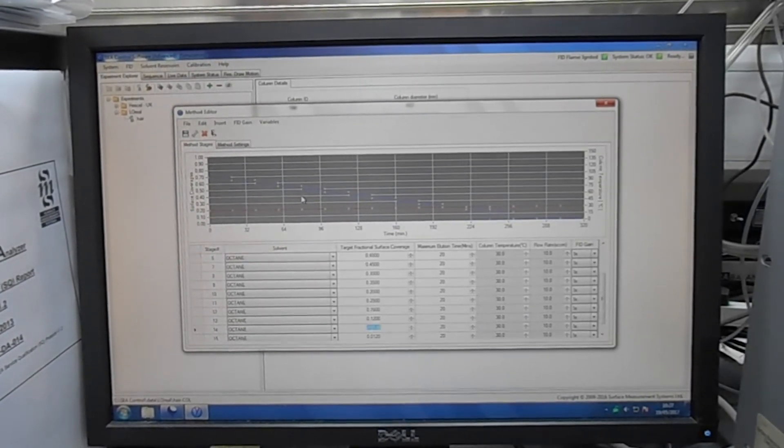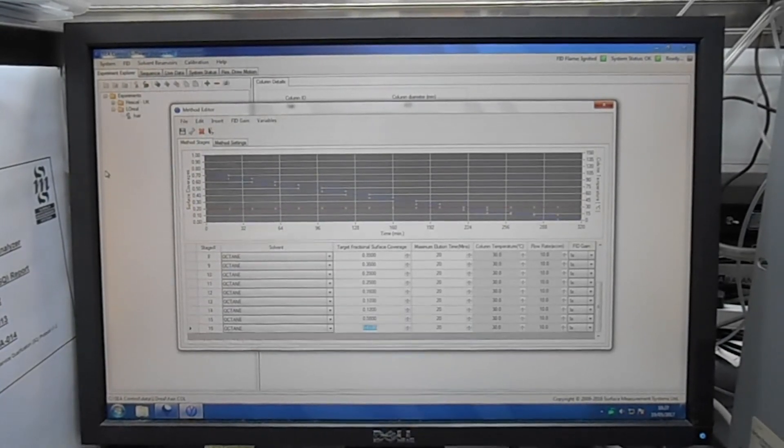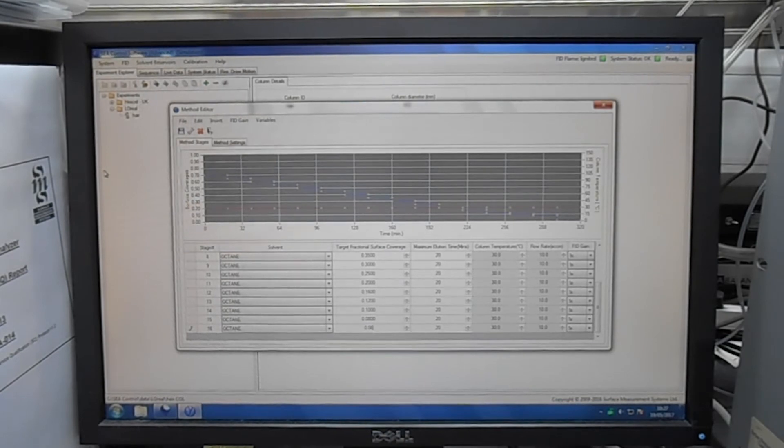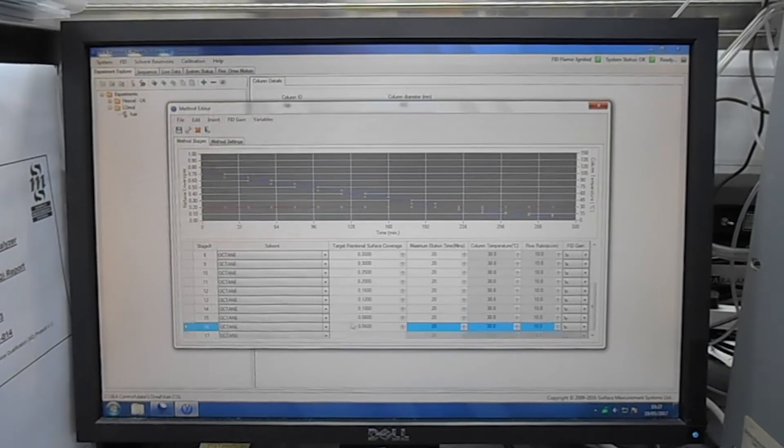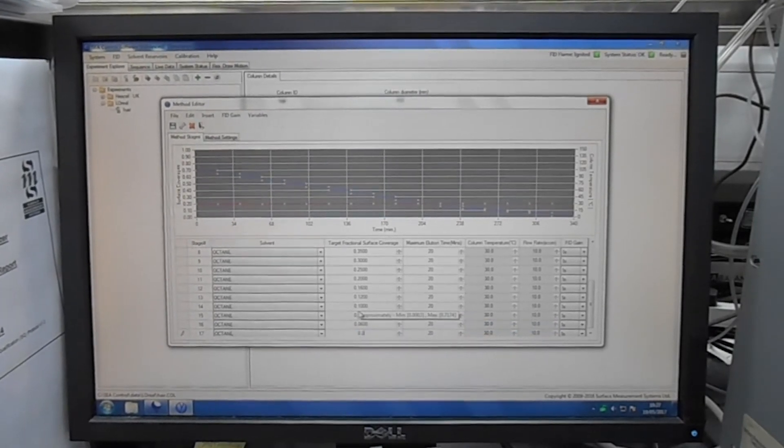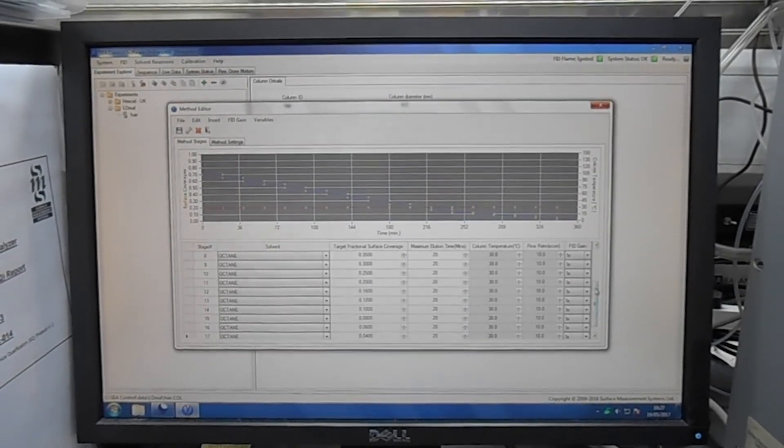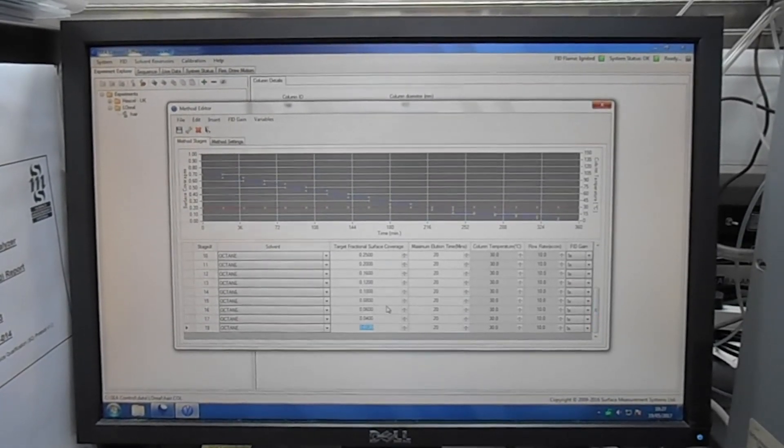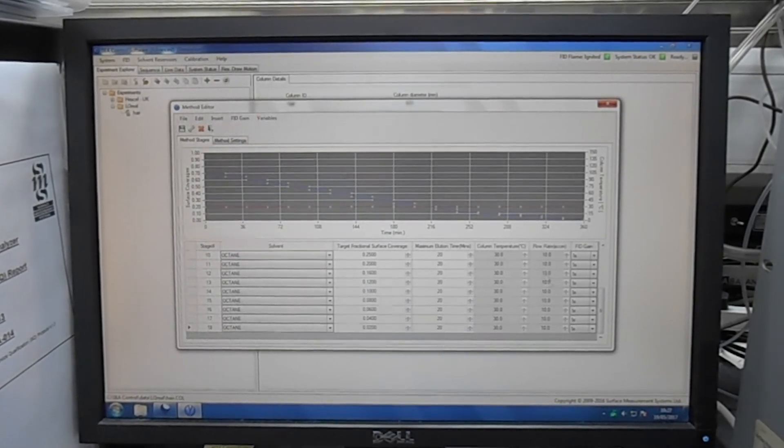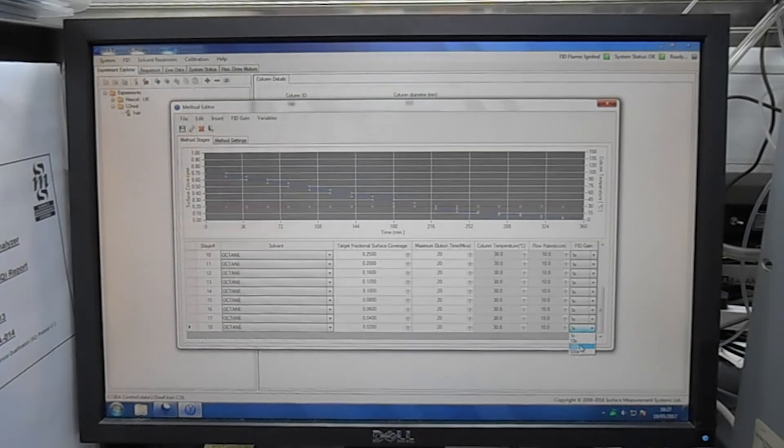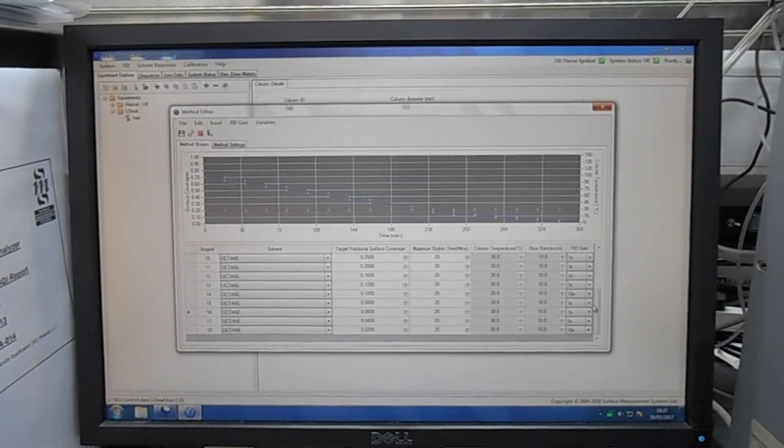And after I finish changing each single step I actually enable the FID gain for the measurement of the octane and I increase the gain for the steps that had very low volume of injection of octane itself. Most of the time a gain of one for FID for octane is more than enough but for very small volume injections we usually increase the gain to 10.